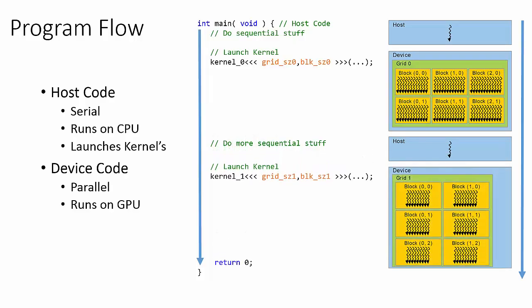One thing to note is that the main C function does not wait on the kernel's completion. So if we need to gather the results from a specific kernel launch, we need to create an explicit barrier in the host code to tell the main C function to wait on the kernel's completion before continuing. We will cover this asynchronous host and device execution in more detail soon. Just remember that the host code does not wait on the kernel's completion unless explicitly told to do so.